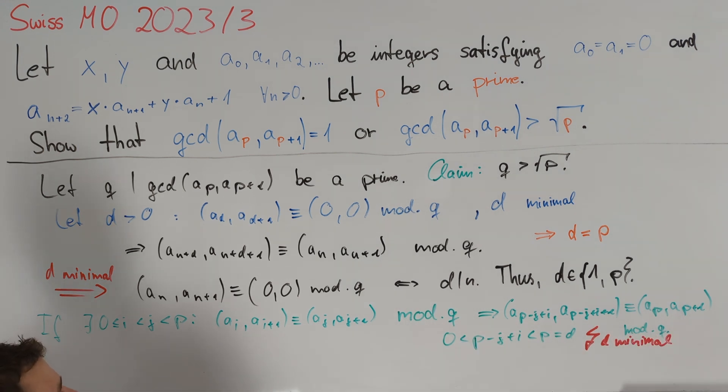In conclusion, the p pairs are distinct modulo q. Since there are only q² pairs of residue classes modulo q, this directly implies that p is less than or equal to q².